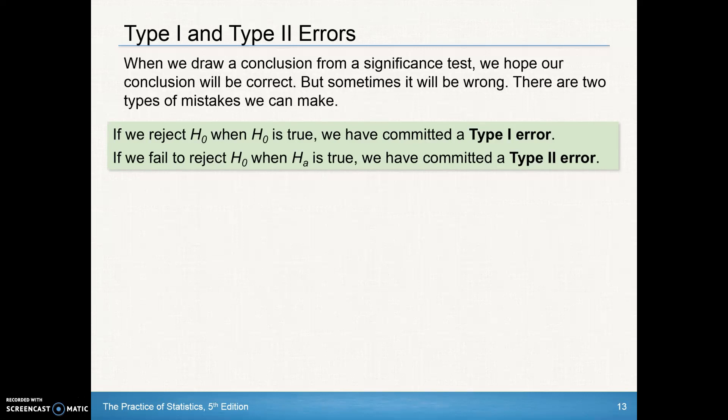If we fail to reject the null when the alternative is true, or I like to think about this instead of saying this part right here, I'll say if we fail to reject the null when the null is false, we have committed a type 2 error.